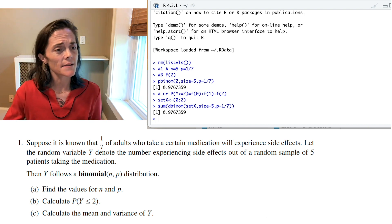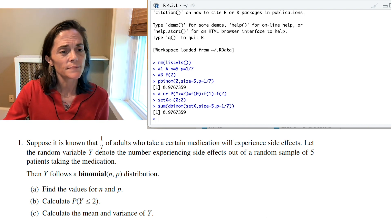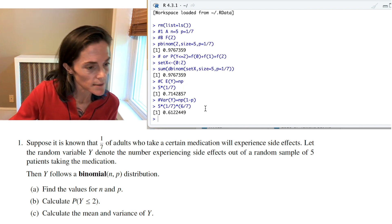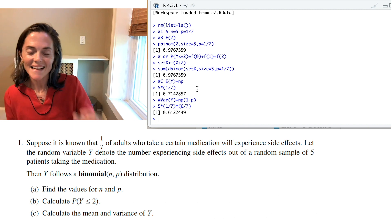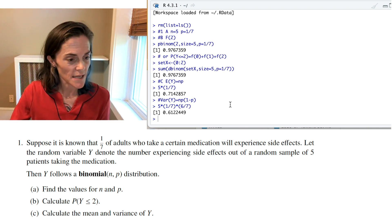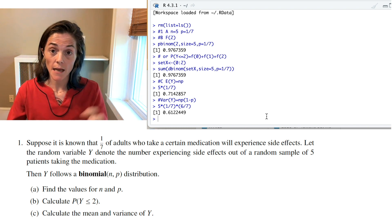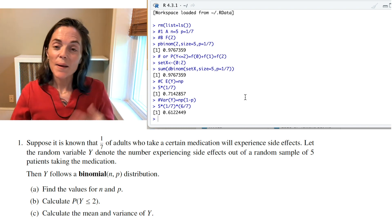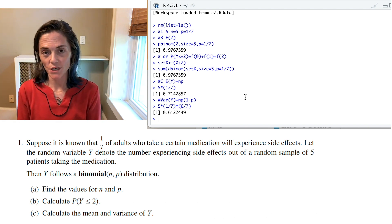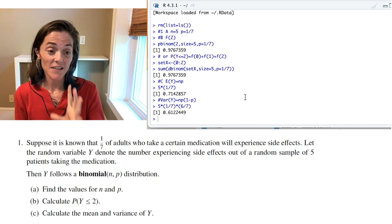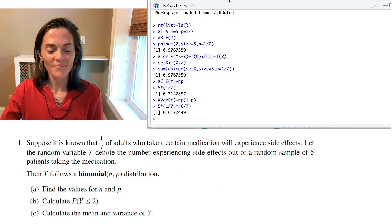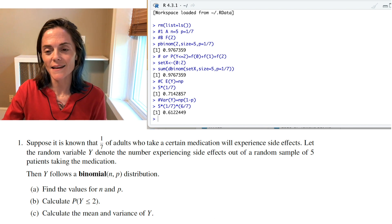Now, the mean and variance, well, we don't need to use R for this. I will just show them here. So, the mean is n times p. So, you just multiply 5 times 1 over 7. The variance is np times 1 minus p. Mean and variance. We discussed the formulas for the binomial distribution in the lesson video, and I've just used them here. Okay. So, this is the end of number 1.